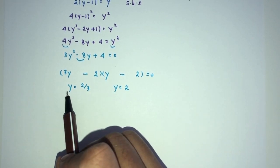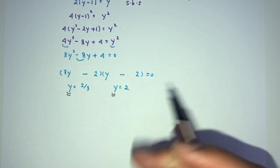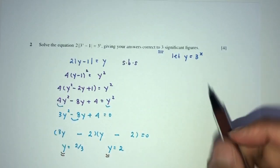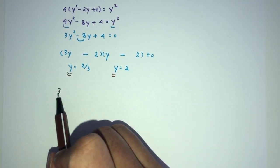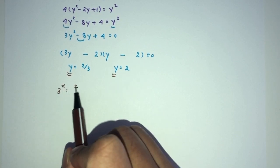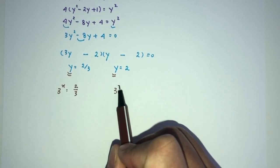Now, in the end, obviously, we're not trying to find the value of y. We're trying to find the value of x. So, y is equal to 3 power of x is equal to 2 over 3. 3 power of x is equal to 2.